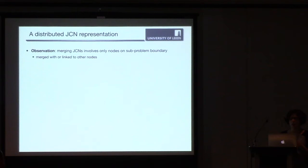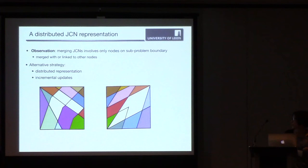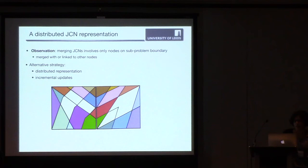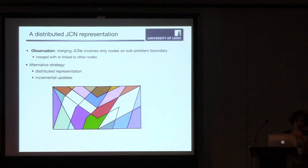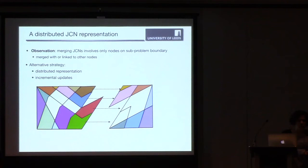So our observation was that when merging JCNs, we only need to look at the boundary, only the nodes of JCN that are related to the boundary of the data sets. Because the internal nodes are not going to be changed, it's just the nodes lying on the boundary that are going to merge or link to other nodes. So that would give us the opportunity to reduce the communication by just sending the boundary of JCN. So we come up with a new strategy consisting of a distributed representation and an incremental update. Here's a simple example, two data sets, we compute JCN for each of them.